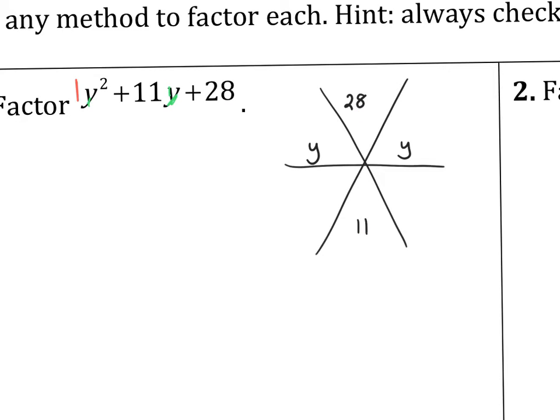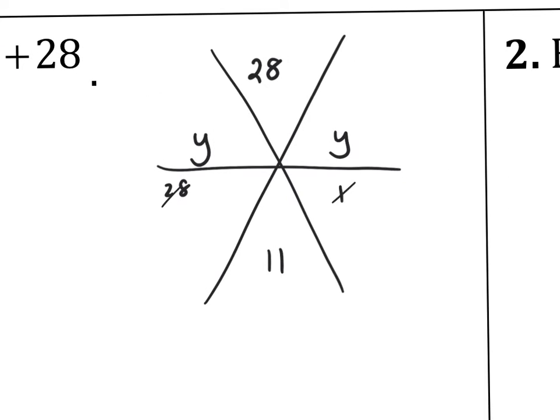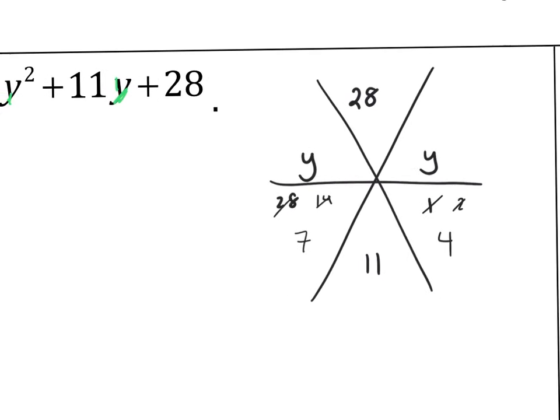So if you need to make a quick list of things, notice that 28 and 1 don't work, too large. 14 and 2 are still too large. That's going to end up being 16. So let's see, 7 and 4. There we go. 7 plus 4 is 11.